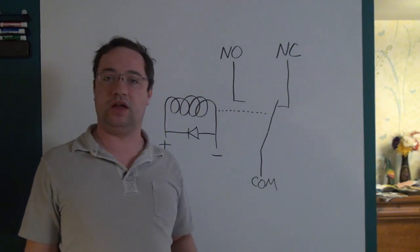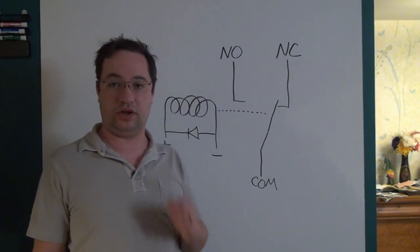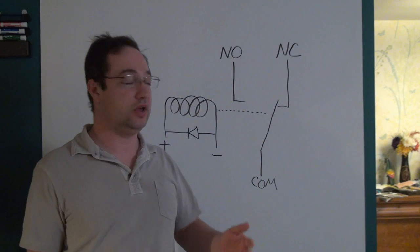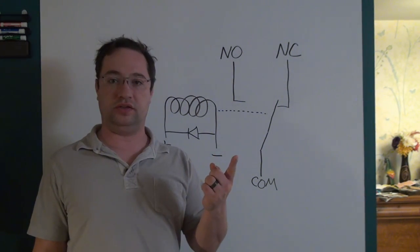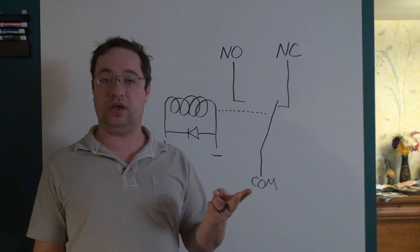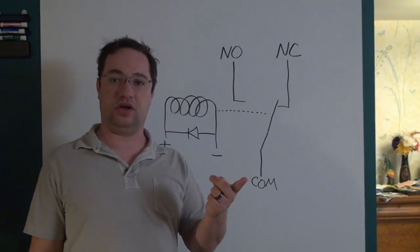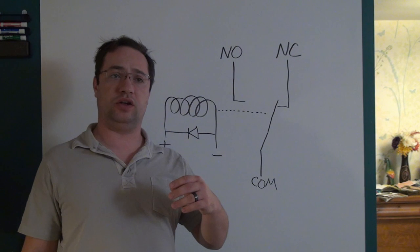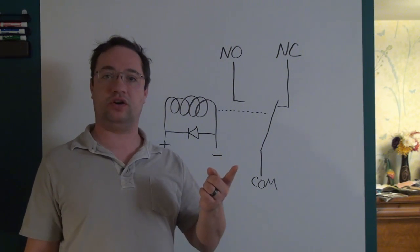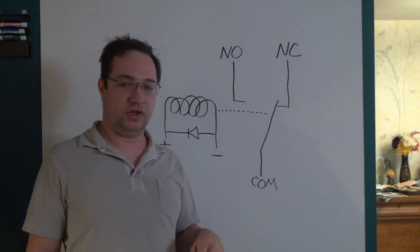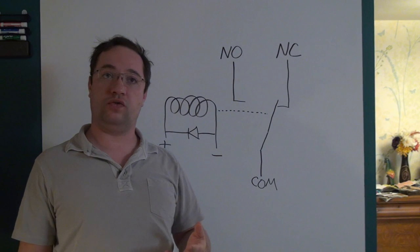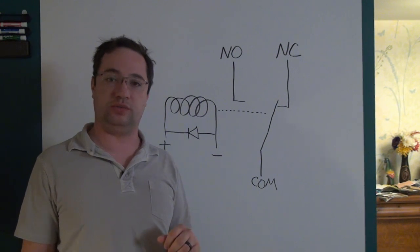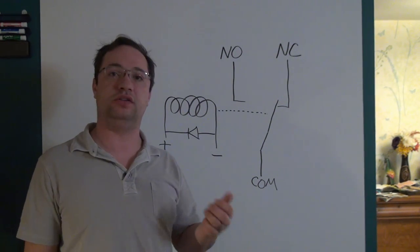The current rating is incredibly confusing. The rating can be given in AC, DC, or both, and not all relays can do AC and DC at the same time. There are also max currents and breaking currents. The profile of how the relay deals with current changes depending on whether it's designed for AC, DC, or both.